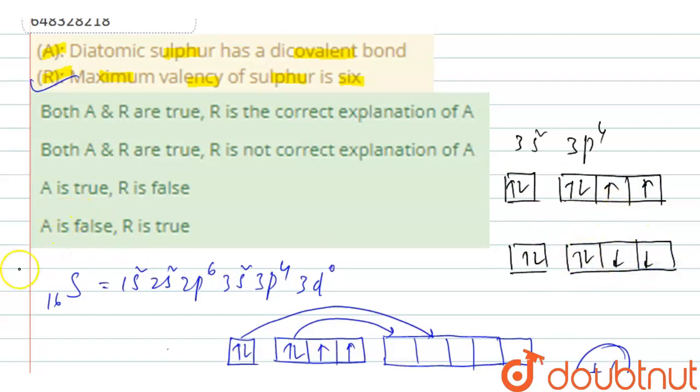It forms a double bond with another sulfur atom like oxygen. So this one will form, here we will have one double bond. Sorry, one sigma bond and this one is one pi bond. Therefore, we will have a diatomic sulfur will be like this: S double bond S, and it is a dicovalent bond.